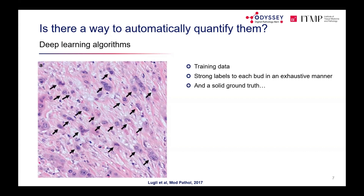In T1 tumours the specimen typically comes from endoscopic biopsy or resection. For stage 2, the whole resection specimen may yield 10 slides of tumour material — each evaluated — and the hottest hot spot is selected and reported, such as '30 tumour buds per hot spot, BD3'.